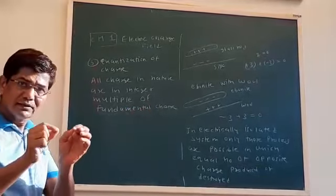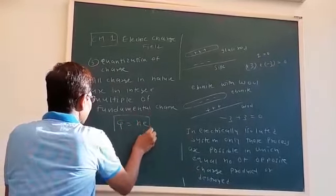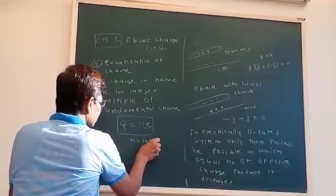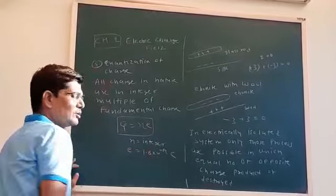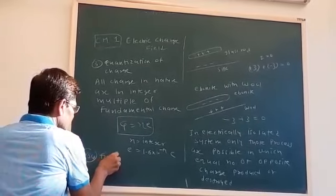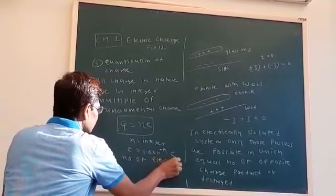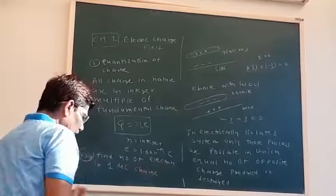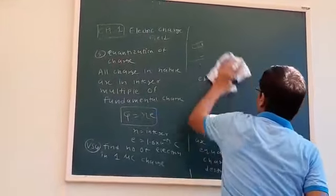What is the fundamental charge? That is the charge of the electron. To represent this, we have the formula Q = nE, where n is an integer number and E is the charge of the electron. For example, find the number of electrons in a one microcoulomb charge.